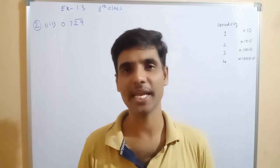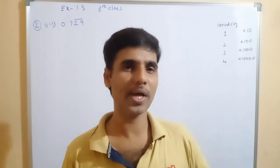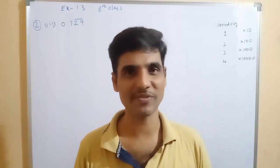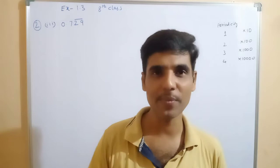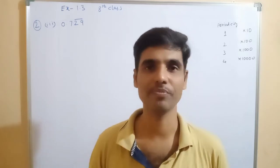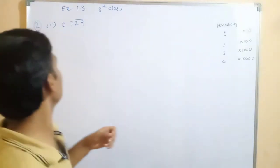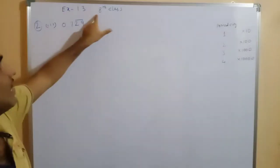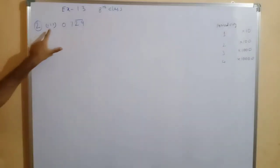Non-terminating recurring means one number, two numbers, or a group of numbers will repeat. The numbers we have to write in P by Q form. You will see Exercise 1.3, 8th class, 2nd bit, 3rd round.